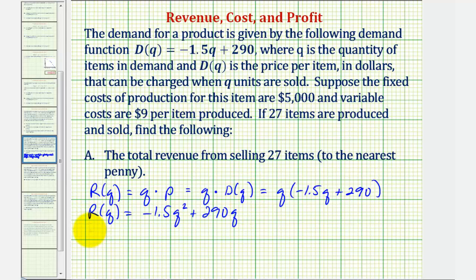This means R of 27, or the total revenue when Q equals 27, is negative 1.5 times 27 squared plus 290 times 27.